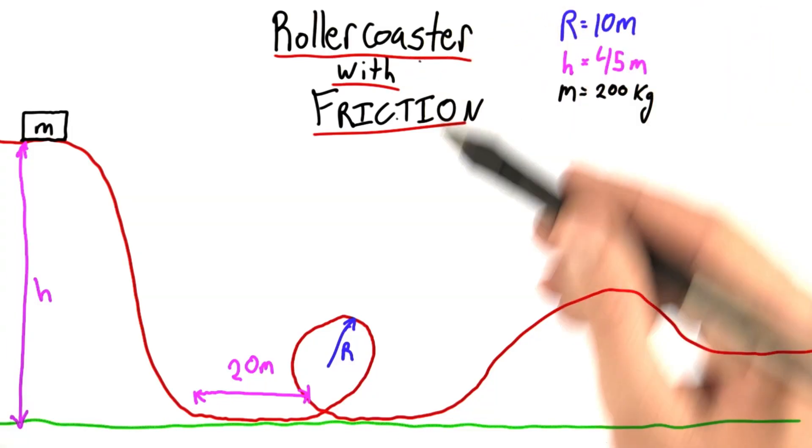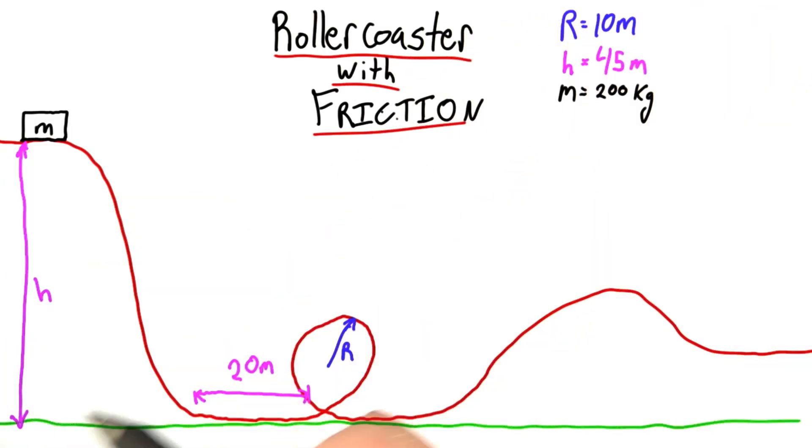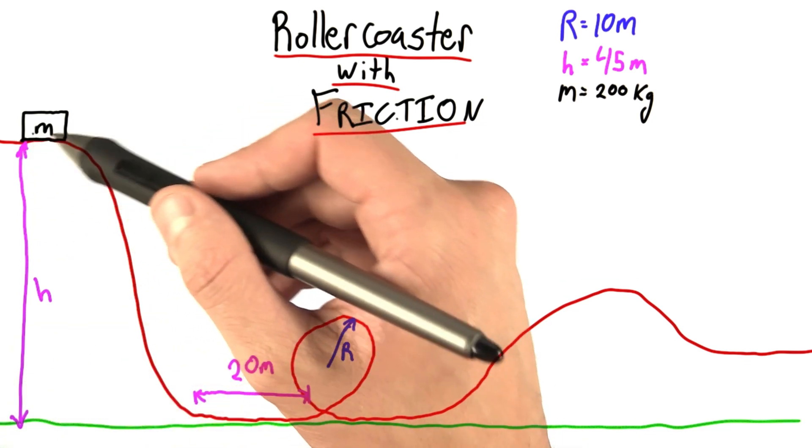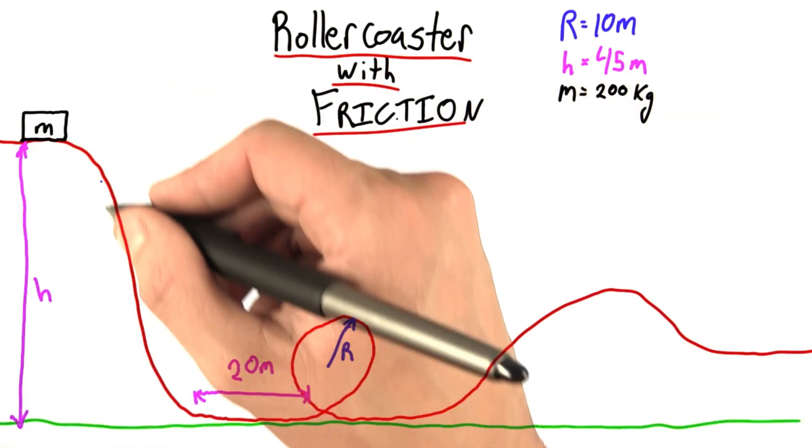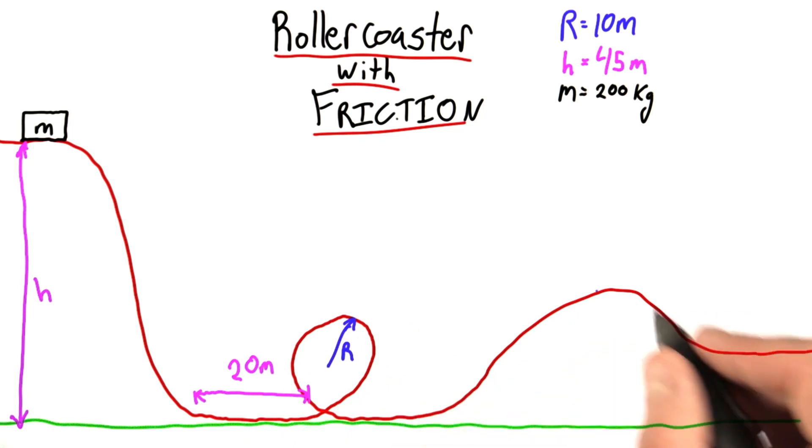This problem is very similar to the previous problem, but now we're going to add a bit of friction. So now let's say that we have a hill of height 45 meters. And again, we have our cart, which will go down the track, through the loop, and continue on.